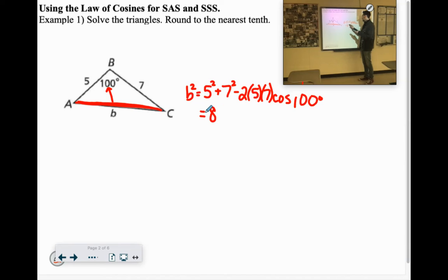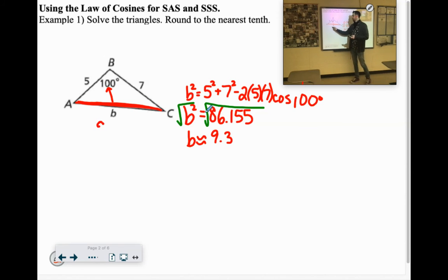And it comes out to 85.155. Oh, sorry. 86.155. But that's b². We still have to square root. So we're going to square root both sides. And we'll approximate it. We'll go to the nearest tenth. So we'll say B is approximately, let's see, square root of that answer 9.28.